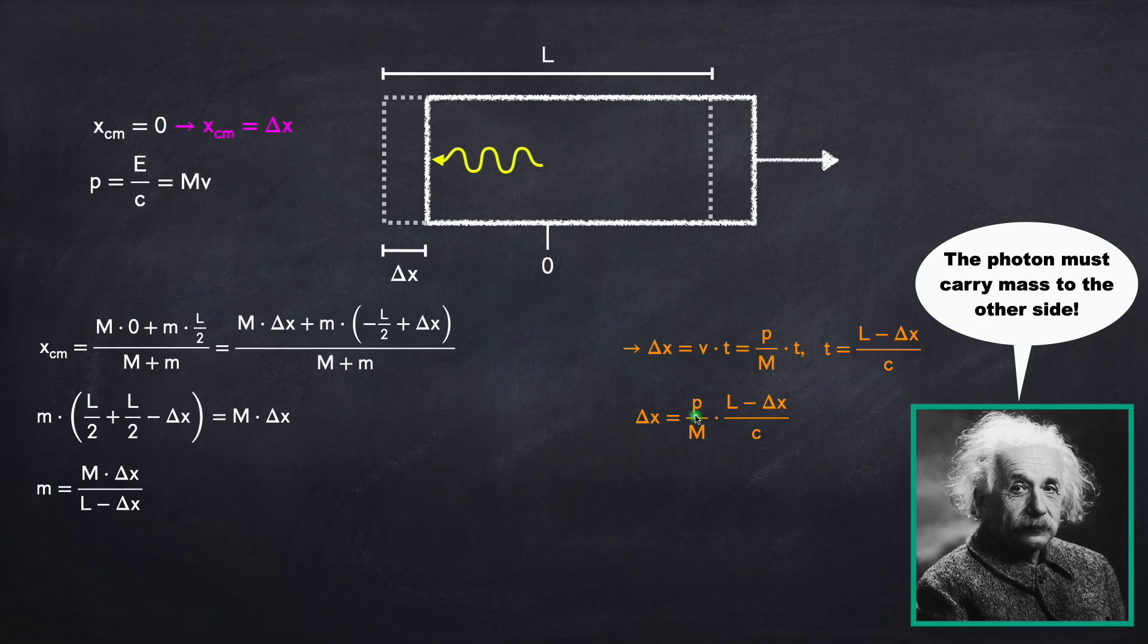Now the momentum is equal to E divided by the speed of light, because the box and the photon have to have the same momentum. So I can plug that in, and I'm also going to divide both sides by this quantity L minus delta x, giving me that delta x over L minus delta x equals E over mc squared.